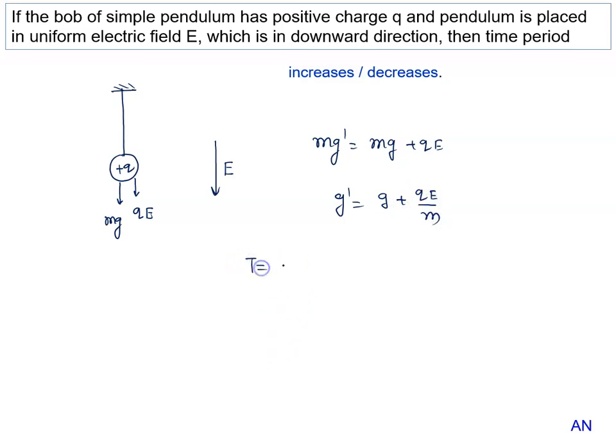What is the formula for the time period? T equals 2π root L upon g effective. So it becomes 2π root L upon g plus Qe by m.